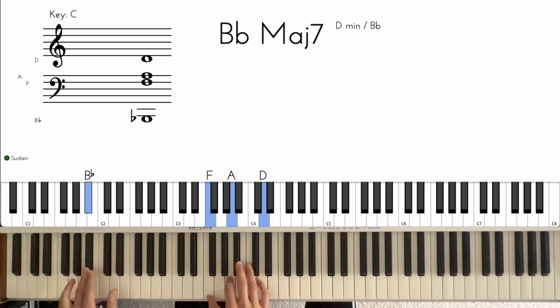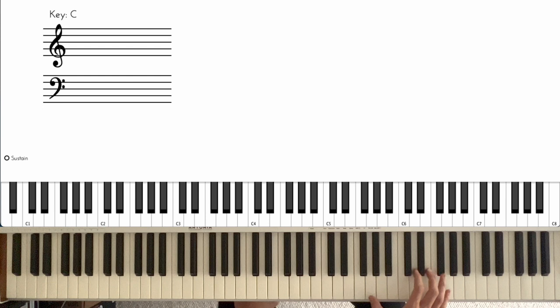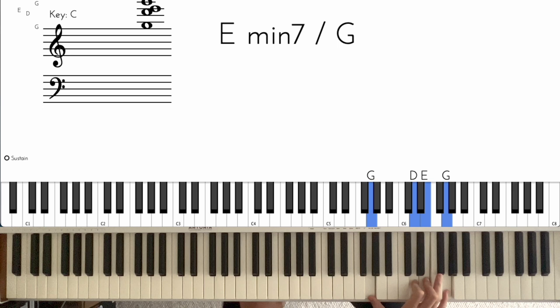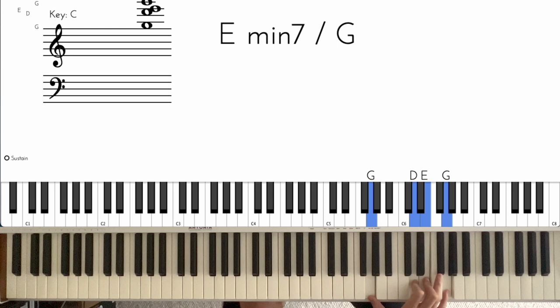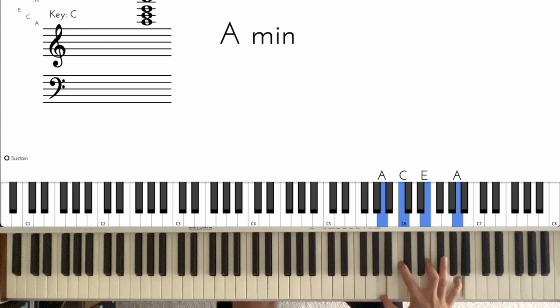Okay, so we're starting here with this Bb major 7. And then from there we go to the main riff, so we'll go one hand at a time, right hand. That's your first chord, to this chord. Okay, so the first two chords, and you're rolling those up as well, like that.